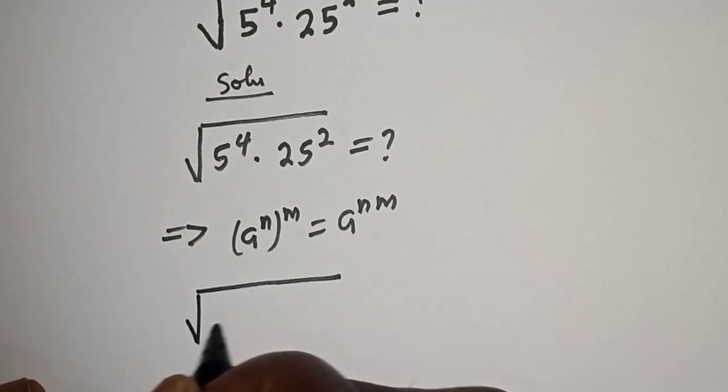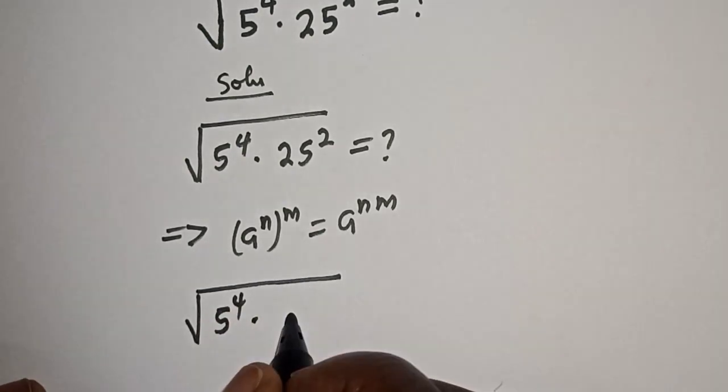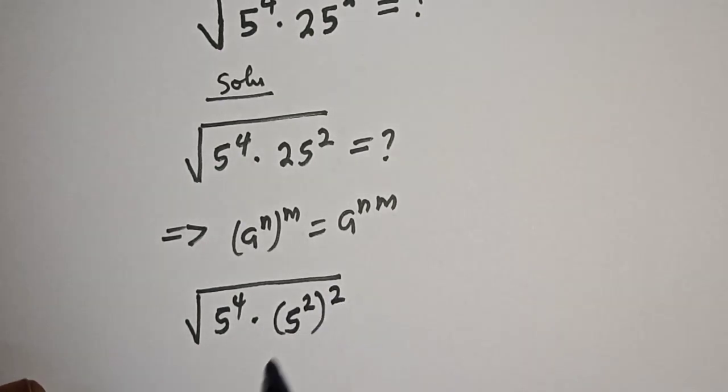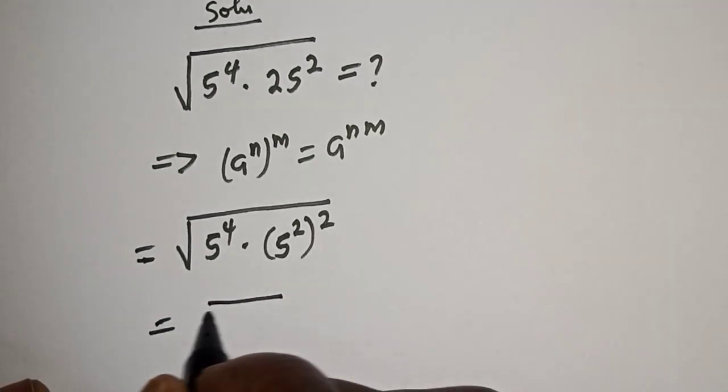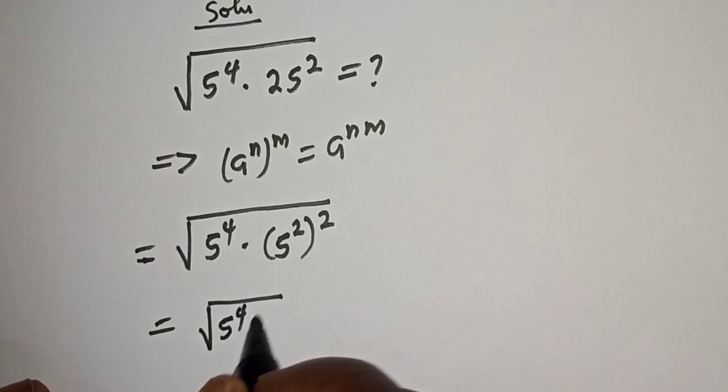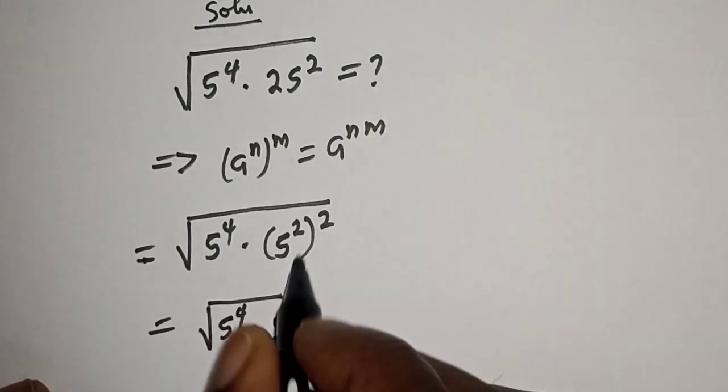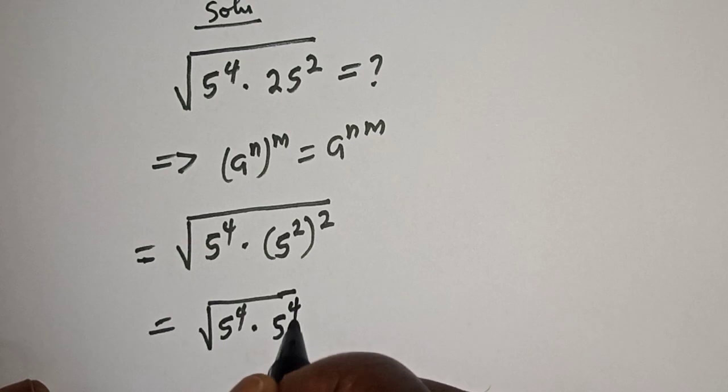We have square root of 5 raised to power 4 multiplied by 25, which is 5 squared, squared. This equals square root of 5 raised to power 4 multiplied by 5 raised to power 2 times 2, that is 4.